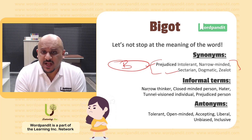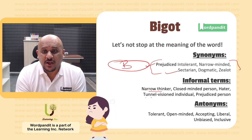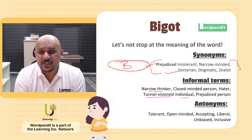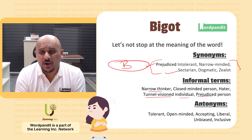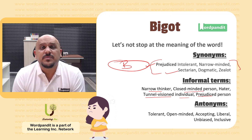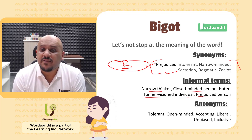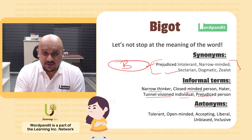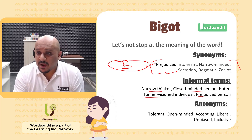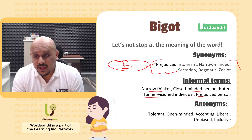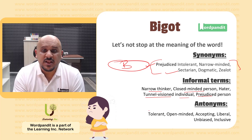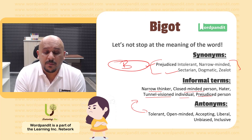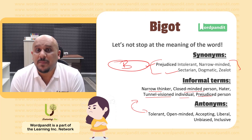Informal terms which are great to remember this word: narrow thinker, tunnel-visioned — one that I personally love — close-minded person, a prejudiced person. These are all terms that can be used to refer to a bigot. The opposite of this would obviously be tolerant, open-minded, accepting, liberal, unbiased, inclusive. So these are the terms which are opposite of a bigot.